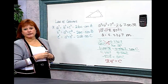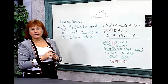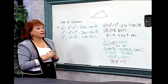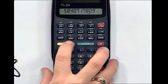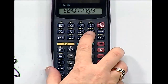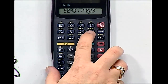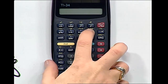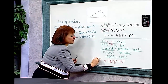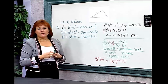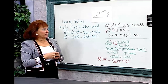I prefer not to leave the answer as a decimal when talking about degrees, so I'll use the degrees-minutes-seconds button on my calculator by hitting second and that button. I get 58 degrees, 24 minutes, and 25 seconds. Rounding off, angle C is 58 degrees and 24 minutes.